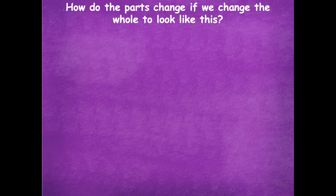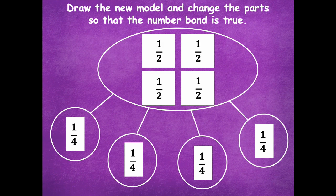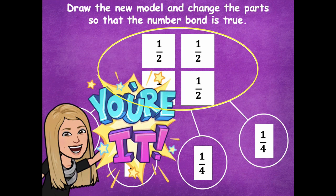So how do the parts change if we change what the whole looks like? Now I still have my parts of one fourth, but I have all of these halves. We don't have enough parts anymore — if we increased our whole, we don't have enough parts. So we can draw a new model and change the parts so the number bond is true. Pause the video — you want parts that equal the total. How many halves do I have? Four halves. So we need our parts to equal four halves. Draw your number bond with the correct number of parts to match your whole.